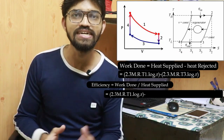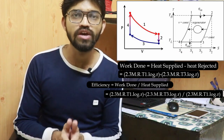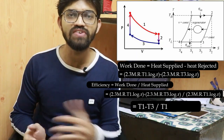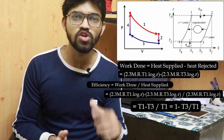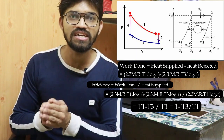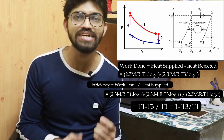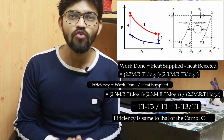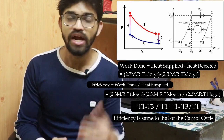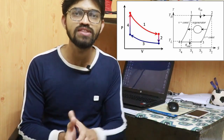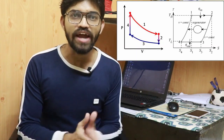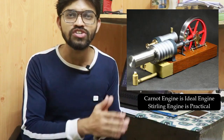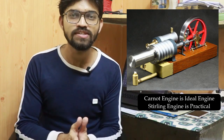The overall efficiency of the Sterling engine is the ratio of total work done to heat supplied. After simplification, the efficiency formula becomes: η = (T₁ − T₃)/T₁ = 1 − T₃/T₁. This efficiency is identical to that of the Carnot cycle. The key difference is that the Sterling engine uses constant volume processes with a regenerator, and unlike the Carnot engine, a practical Sterling engine can actually be constructed.